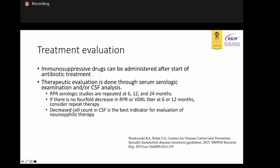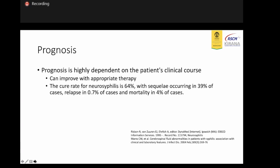In the treatment evaluation, we can sometimes give patients immunosuppressive drugs, as long as we also start antibiotic treatment. We check RPR serology repeatedly every 6, 12, and up to 24 months. The prognosis of ocular syphilis is mostly good and can improve with appropriate therapy. The cure rate of ocular syphilis is about 60%, with visual impairment still occurring in 40% of cases, as reported in the literature.